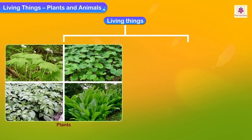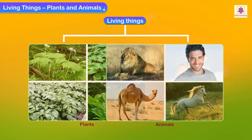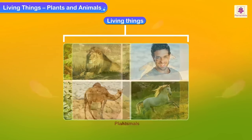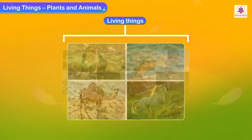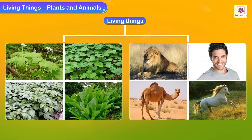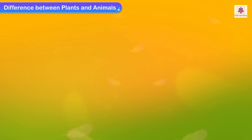Living things can be divided into two broad categories: plants and animals. Although they both exhibit the characteristics of living things, they are different in many ways. Let us look at the differences between plants and animals.